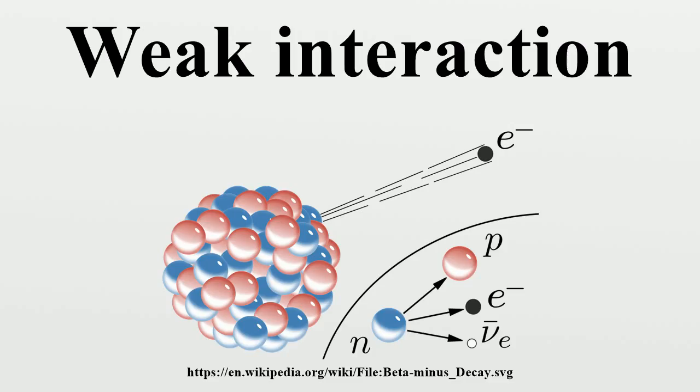The weak interaction affects all the fermions of the standard model, as well as the Higgs boson. Neutrinos interact through gravity and the weak interaction only, and neutrinos were the original reason for the name weak force.